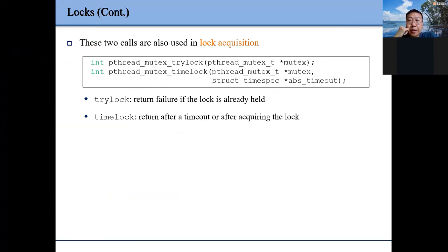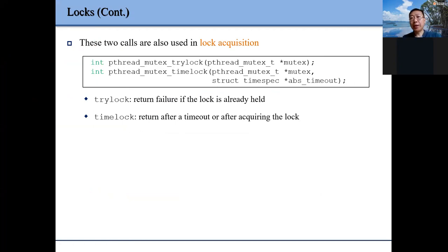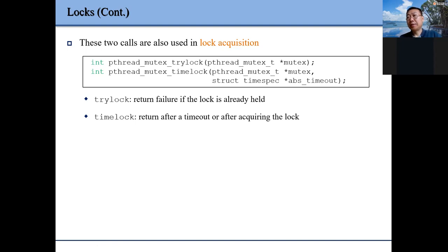When we acquire a lock, we can also use a different API called trylock. Trylock means: I will try to acquire this lock. If the lock is already held by others, I will return failure immediately — I don't want to wait. In terms of why we need this kind of function, it will be clear later because this can help avoid deadlock.